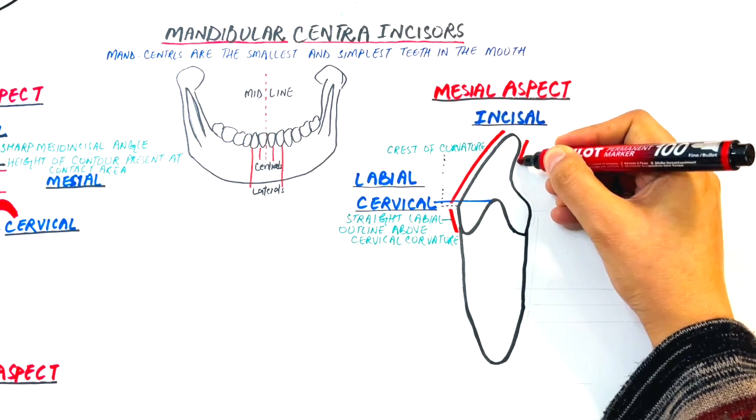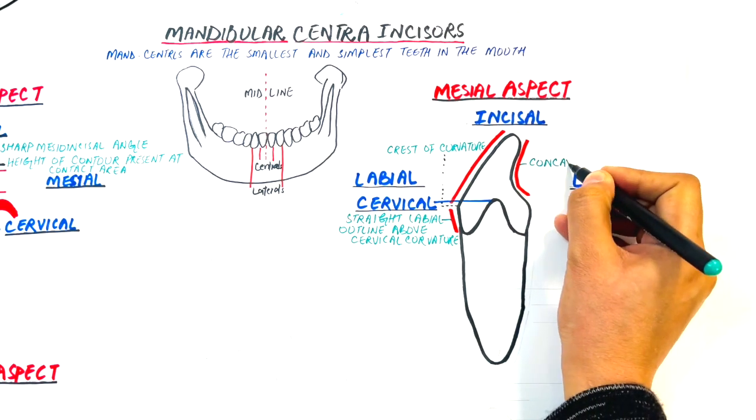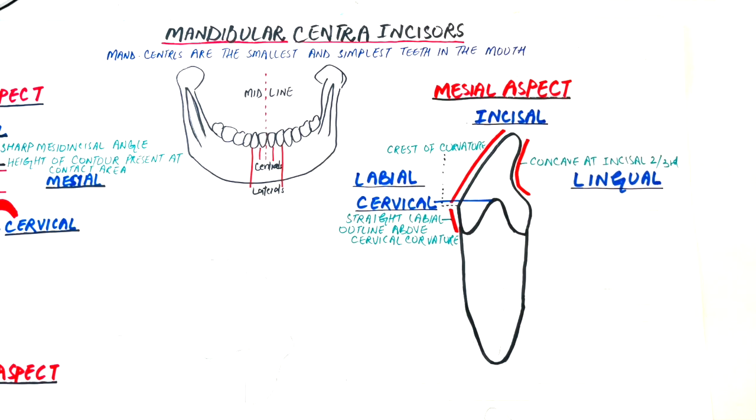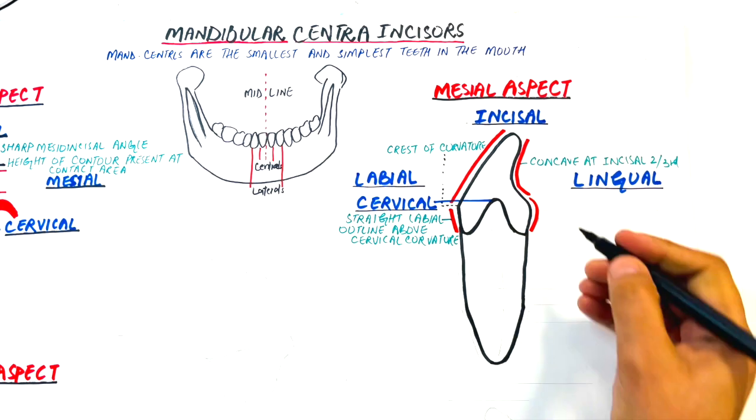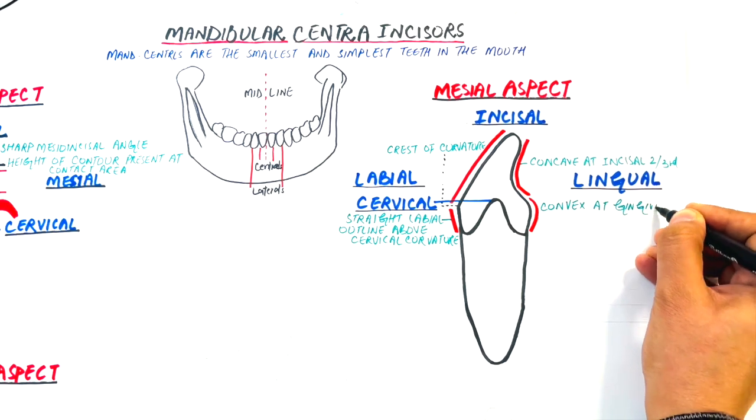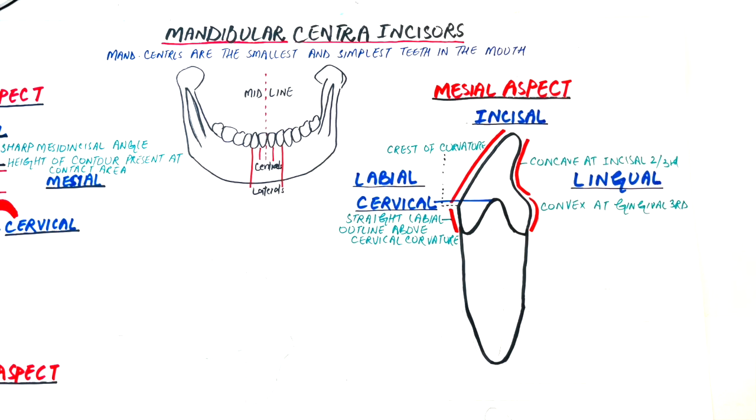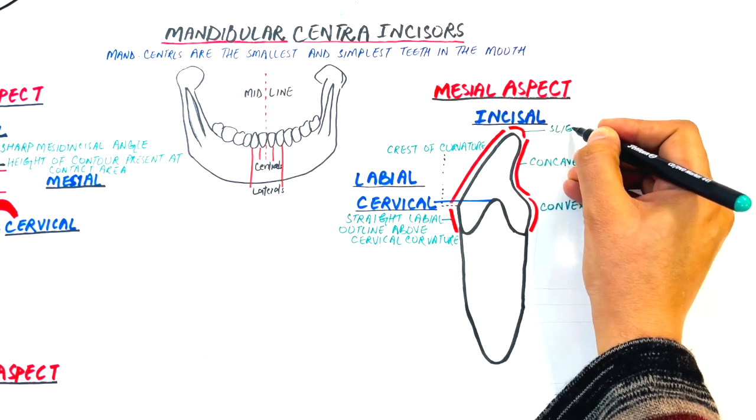The lingual outline is concave in the incisal two-thirds and then convex in the cingulum area or at the gingival third. The incisal outline or the incisal edge is slightly rounded and is slightly lingual to the central axis of the crown and root.